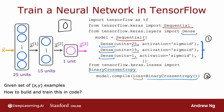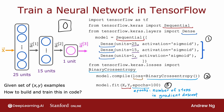We'll say more in the next video about what this really is. And then having specified the loss function, the third step is to call the fit function, which tells TensorFlow to fit the model that you specified in step one, using the loss or the cost function that you specified in step two, to the dataset X, Y. Back in the first course, when we talked about gradient descent, we had to decide how many steps to run gradient descent. Epochs is a technical term for how many steps of a learning algorithm like gradient descent you may want to run.